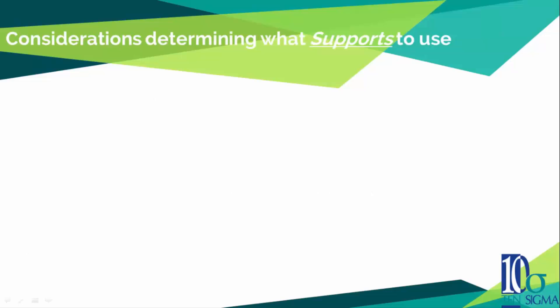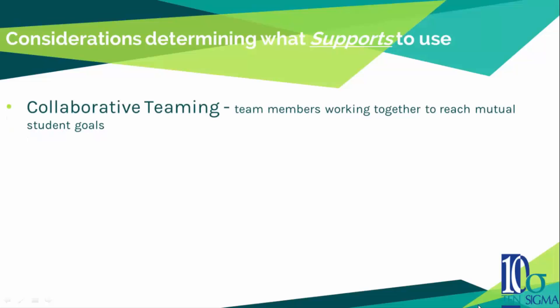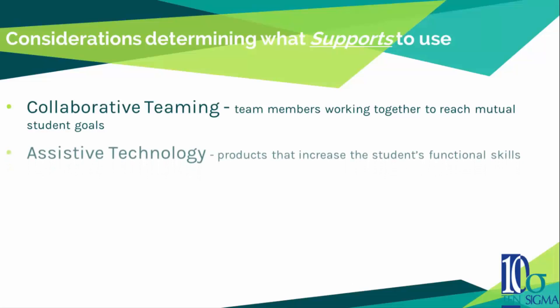Considerations in determining what supports to use. First, collaborative teaming — team members working together to reach mutual student goals. This can be different from a multidisciplinary team, where professionals often work individually in their area of expertise. The second consideration is assistive technology — products that increase the student's functional skills, such as low and high-tech technology and augmentative and alternative communication devices.